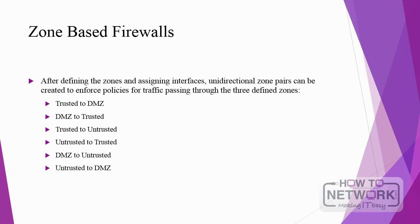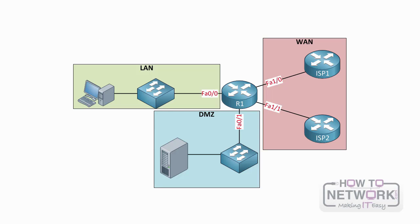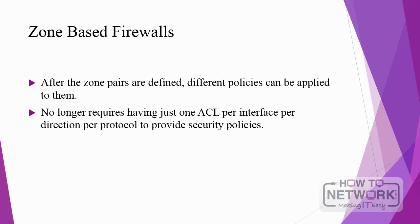After defining the zones and assigning interfaces, unidirectional zone pairs can be created to enforce policies for traffic passing through the defined zones. After the zone pairs are defined, different policies can be applied to them. Once the modular policies have been created and the zone pair relationships have been defined, other interfaces placed into that zone will have the policy apply to them automatically. Using zone-based firewalls no longer requires having just one ACL per interface, per direction, per protocol to provide security policies.